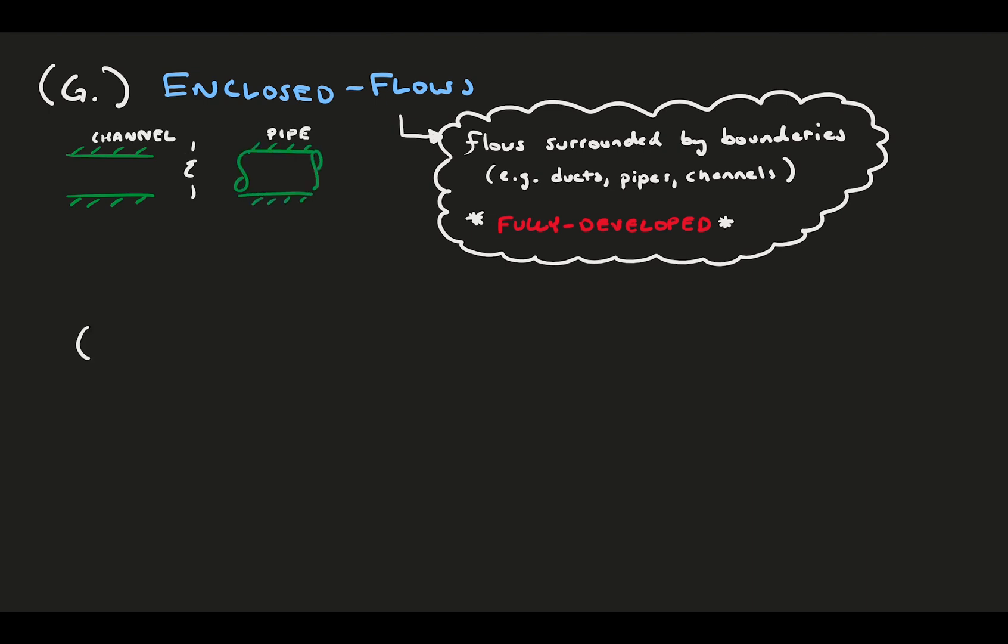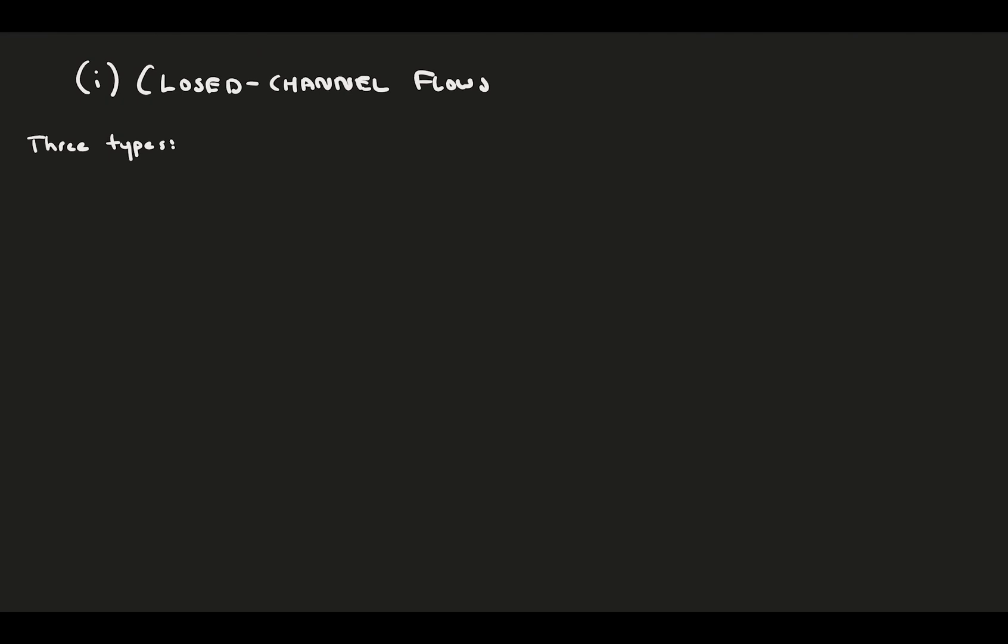You will see this makes life a lot easier in the flow solving. The two-dimensional version of the enclosed flow is the closed channel flow. Here we have flow between two parallel plates that extend effectively infinity in the third direction, meaning two-dimensional.